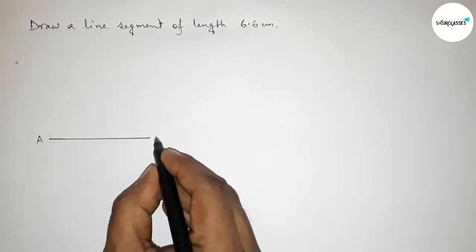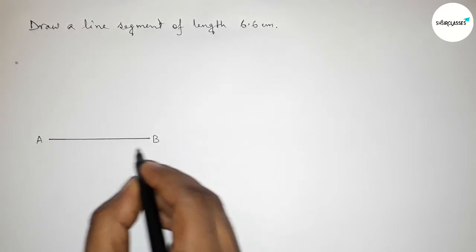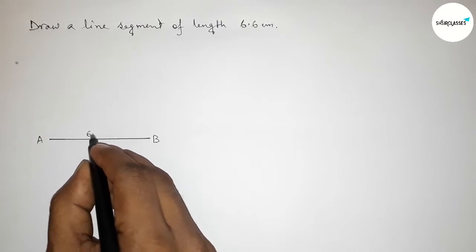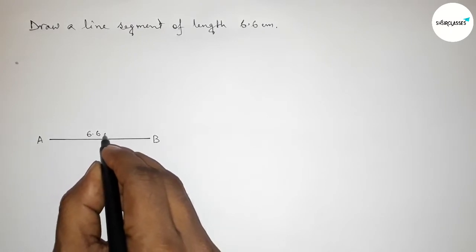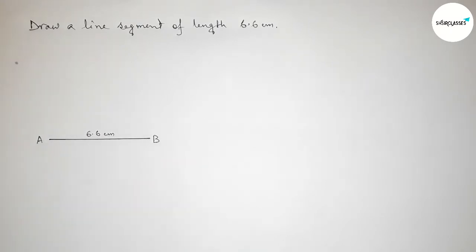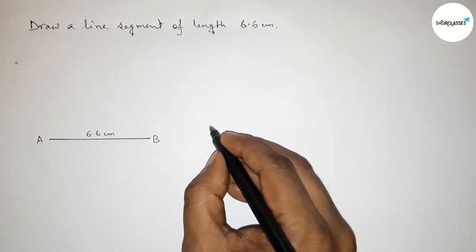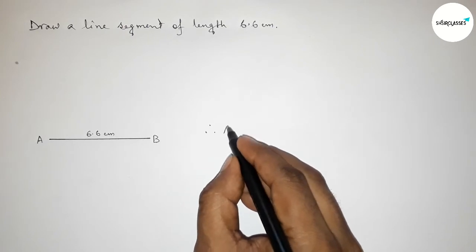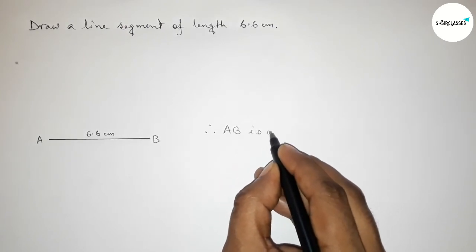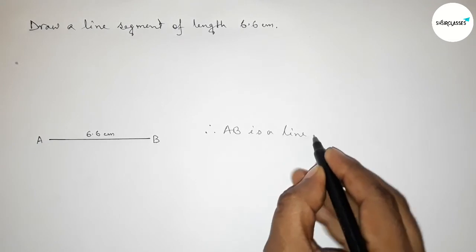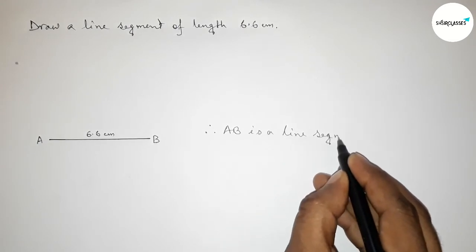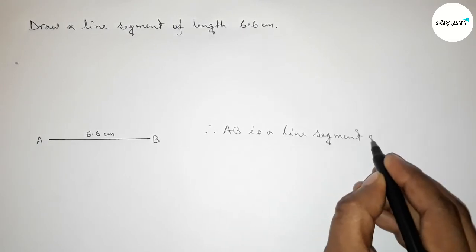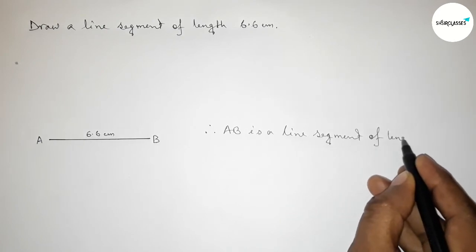So AB equals to 6.6 centimeters. Therefore we can say that AB is a line segment of length 6.6 centimeters, and you can draw this line with the help of a ruler by this way.